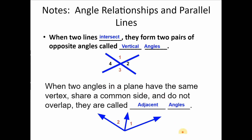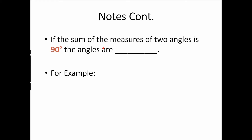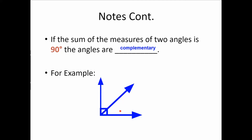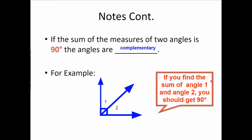If the sum of the measures of two angles is 90 degrees, the angles are complementary. If we have a 90-degree right angle and split it, then each part adds up to 90 degrees — they are complementary to each other. Note that they don't have to be right next to each other to be complementary. You could have 70 and 20, or 60 and 30 — as long as they add up to 90 degrees.